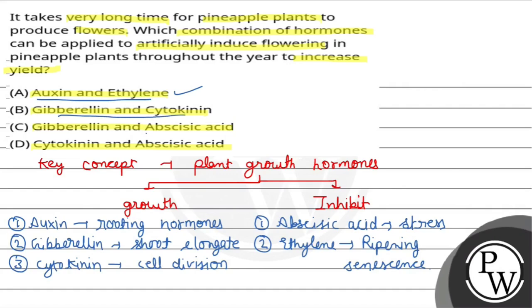Option B is gibberellin and cytokinin. Gibberellin is for elongation and cytokinin is for cell division — neither directly induces flowering in this context, so option B is wrong. Option C is gibberellin and abscisic acid. Abscisic acid is a stress hormone and does not induce flowering, so option C is also wrong.